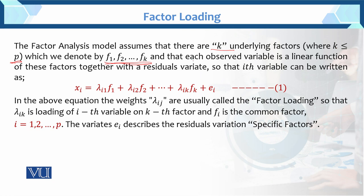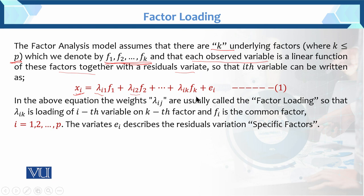Each observed variable is a linear function of these factors together with the residual variate. We have developed the model. In the model we have XI, this is the random variable, which is associated with lambda I1 times F1 (factor 1), lambda I2 times F2 (factor 2), up to lambda IK times FK (factor K). So total K factors are there, plus EI, where EI denotes the residual variate — that is, the error term.